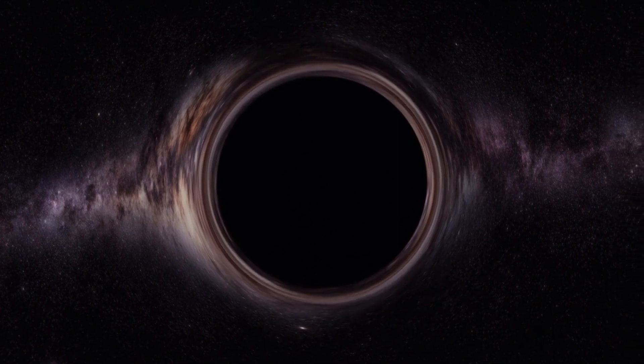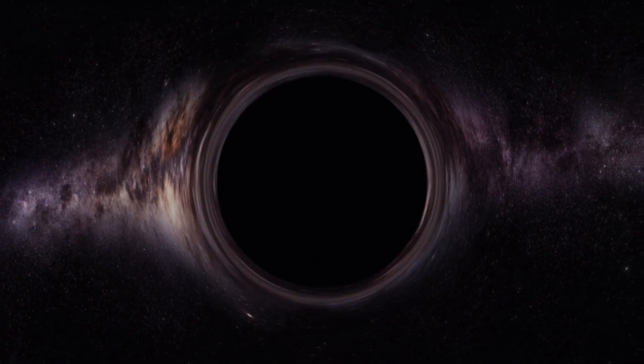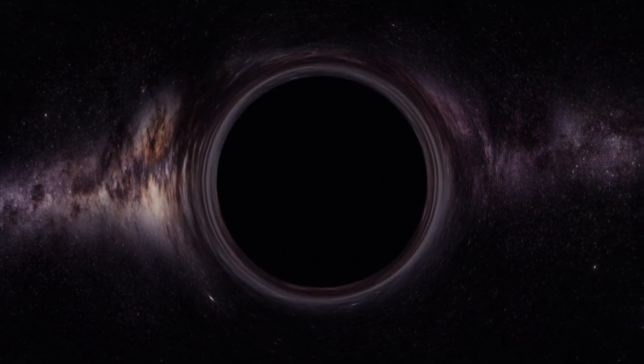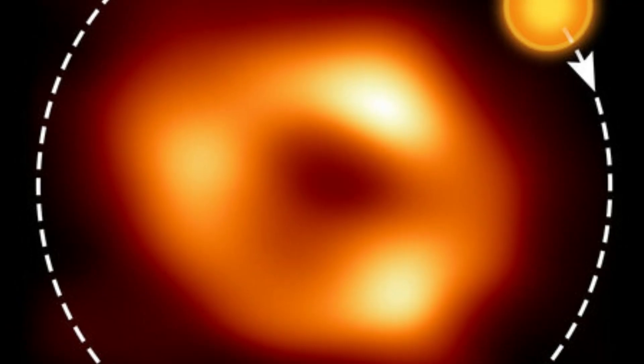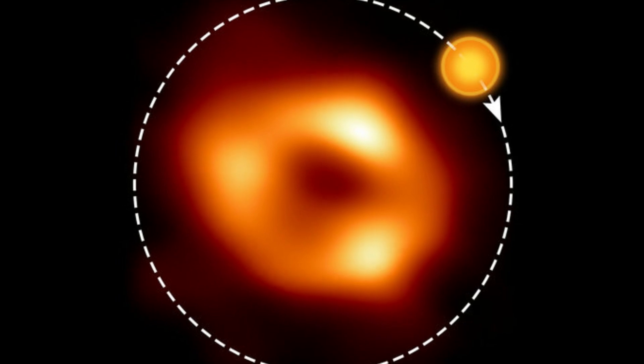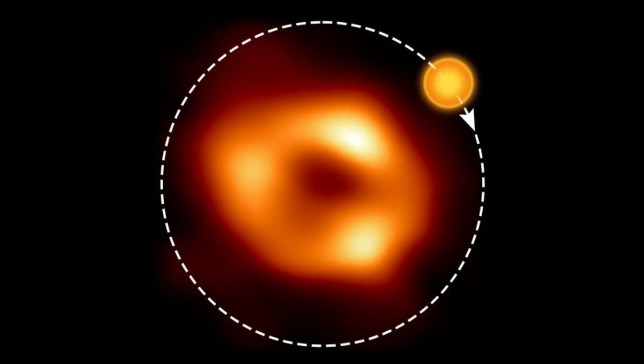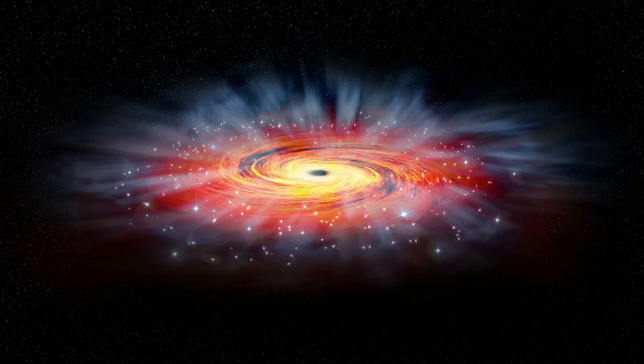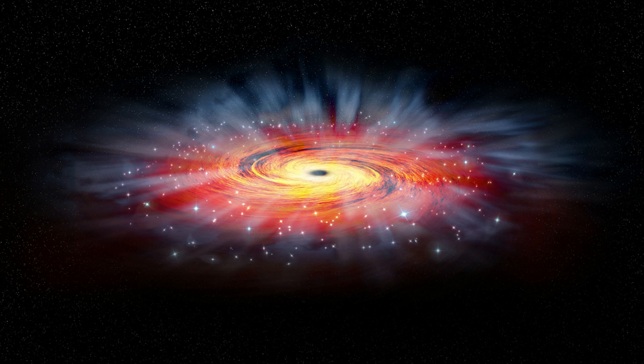Scientists recently made a groundbreaking discovery by detecting an X-ray echo from centuries ago, shedding light on the intense event surrounding Sagittarius A. This finding also provides an explanation for the brilliant luminosity observed in galactic molecular clouds surrounding the black hole. It is suggested that these clouds are reflecting the X-rays emitted by the black hole during the early 19th century.